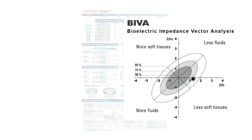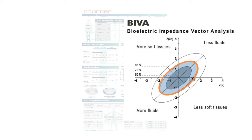How does BIVA work? It compares the subject's measured resistance and reactance to healthy subjects of the same gender, age, and ethnicity. This makes it possible to track changes in cellular status and determine if results are noticeably abnormal. The three ellipses correspond to results for the comparison group: 95% of people's results fall within the outermost ellipse, 75% within the second, and 50% within the innermost. The further out the measurement point, the more abnormal your results. Observe if the measurement point changes over time to understand trends.